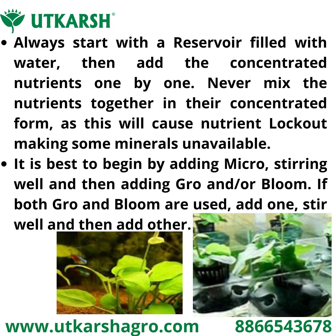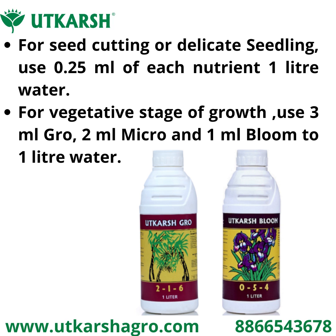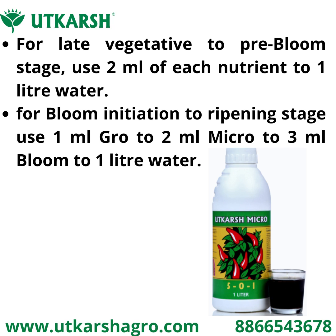If both Grow and Bloom are used, add one, stir well, and then add the other. For seed, cutting, or delicate seedling, use 0.25 ml of each nutrient per liter of water. For the vegetative growth stage, use 3 ml Grow, 2 ml Micro, and 1 ml Bloom per liter of water. For bloom initiation to ripening, use 1 ml Grow, 2 ml Micro, and 3 ml Bloom per liter of water.